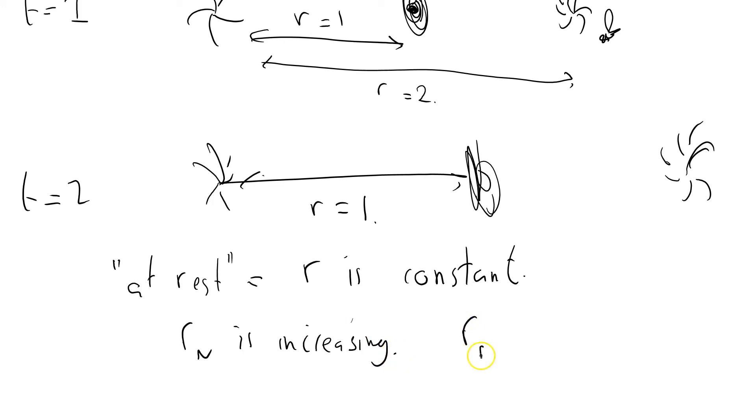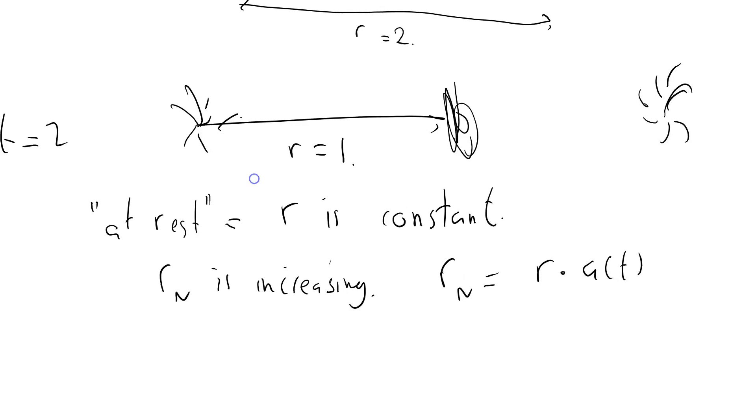And r_N equals r times a(t). If we differentiate it, we can say that r_N dot equals r times a dot of t, because r is constant for any particular galaxy.